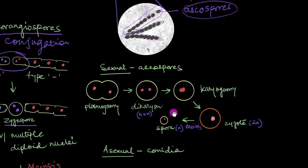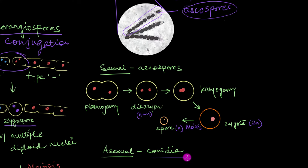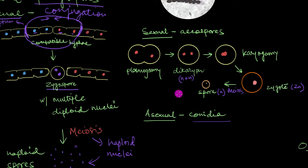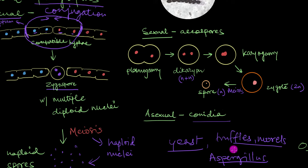Ascomycetes also undergo asexual reproduction by producing asexual spores called conidia. Ascomycetes are incredibly helpful to us as well, especially commercially. And a very important example of that is yeast. Remember how we talked about dry activated yeast being something that we can find in our kitchen? So we use yeast in a variety of different things like baking, brewing, fermenting wine, and a bunch of different things. So yeast is an ascomycete which is extremely important to us. Other examples of ascomycetes include truffles, then there are morels. Now these are treated as delicacies in different parts of the world. Then there is also Aspergillus, which is also an ascomycete.